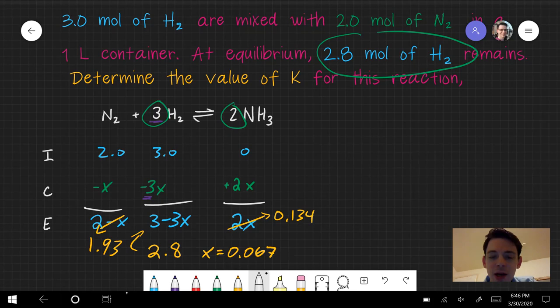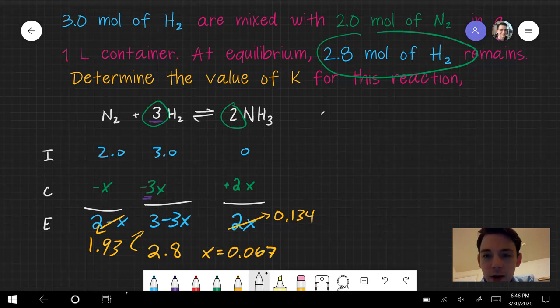Now it's asking me to find the value of K. So if you remember, K is the value of the Q expression at equilibrium. We're going to need to write the Q expression for this.